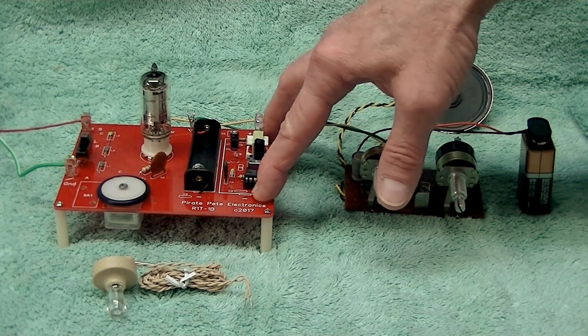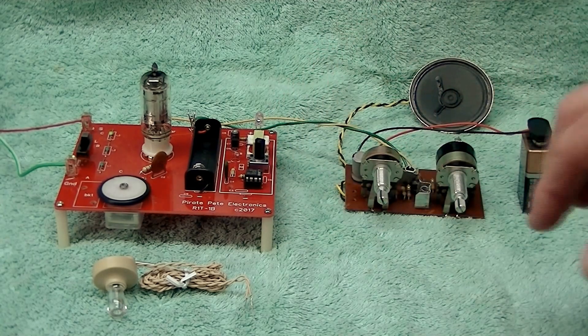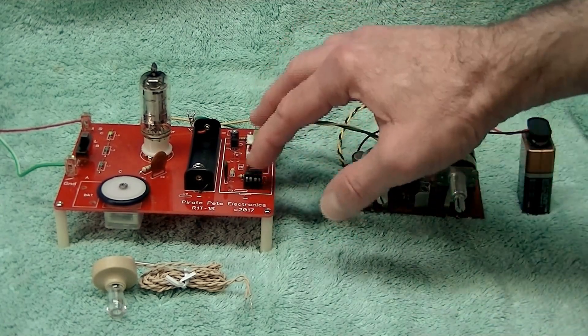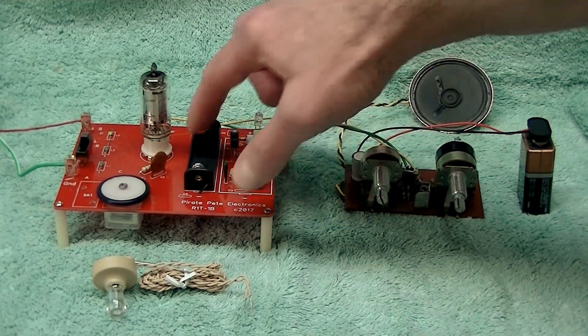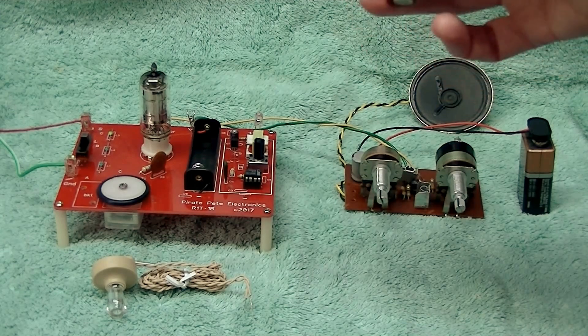This circuit incorporates special circuitry that derives the 22 and a half volts from the one and a half volt penlight battery, so this radio operates on a single one and a half volt AA battery.